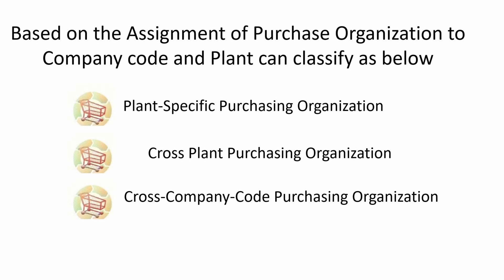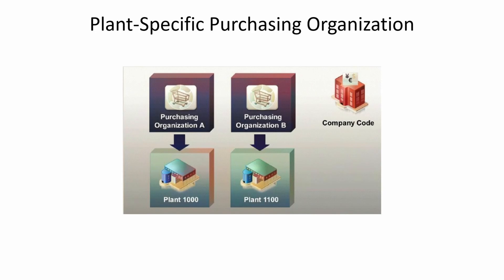Based on the assignment of purchase organization to company code and plant, we can classify three different types: first is the plant-specific purchasing organization, second is the cross-plant purchase organization, and third is the cross-company code purchasing organization. We must assign purchase organization to plant, while assigning purchase organization to company code is optional.